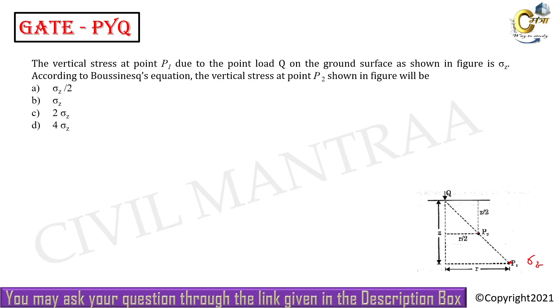Sigma z equals what? 3Q divided by 2π z squared, into 1 by 1 plus r by z whole square, whole to the power 5 by 2. This equals sigma z.